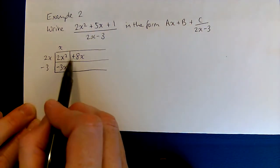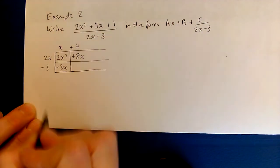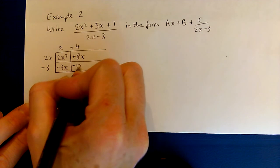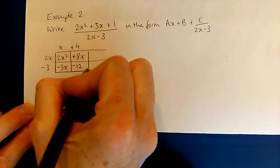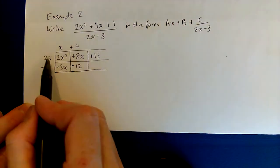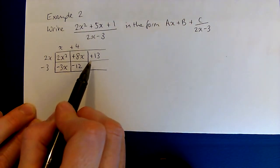What do we multiply 2x by to make plus 8x? We multiply it by positive 4. But if I multiply these two terms together I get minus 12. I don't want that, I want a plus 1, so that means I need to add 13. Now I can't multiply 2x by anything to make 13 unless I use a fraction.